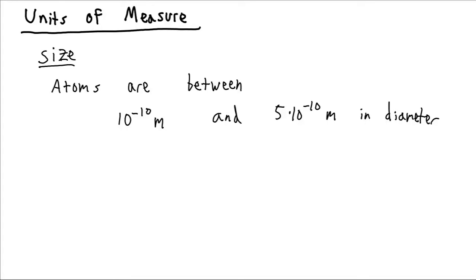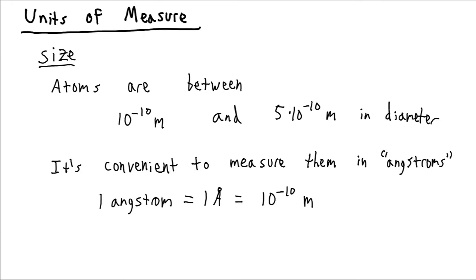When we're working with atoms, we find that they tend to all be roughly the same scale, between 10 to the minus 10 and 5 times 10 to the minus 10 meters in diameter. Since we're always working in the same scale, it's convenient to define a unit which operates in that scale, and that unit is the angstrom.